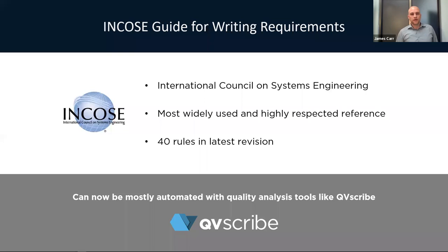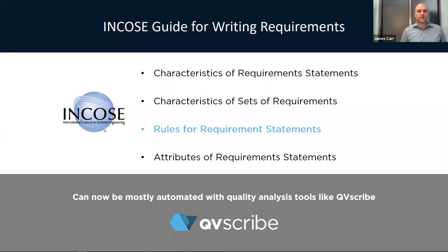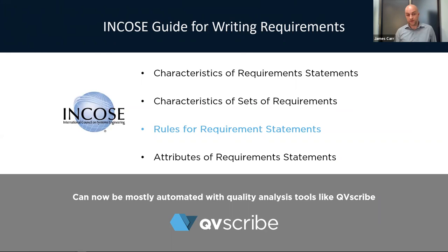The INCOSI Guide for Writing Requirements — INCOSI is the International Council on Systems Engineering. It is the most widely used and highly respected reference on this topic. The current version includes 40 rules, along with characteristics for requirements statements, characteristics for sets of requirements, the rules for requirements statements — which is what we're talking about — and the attributes for requirements statements as well. So we're covering one of those four categories. If you subscribe to INCOSI you can access the current version with full details for all of these.